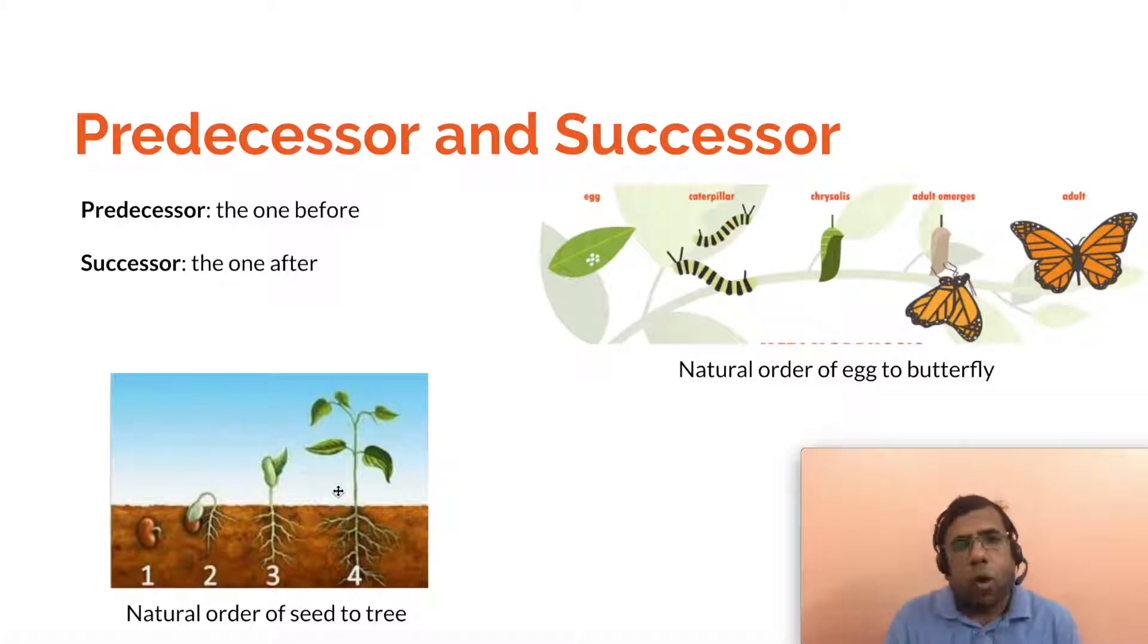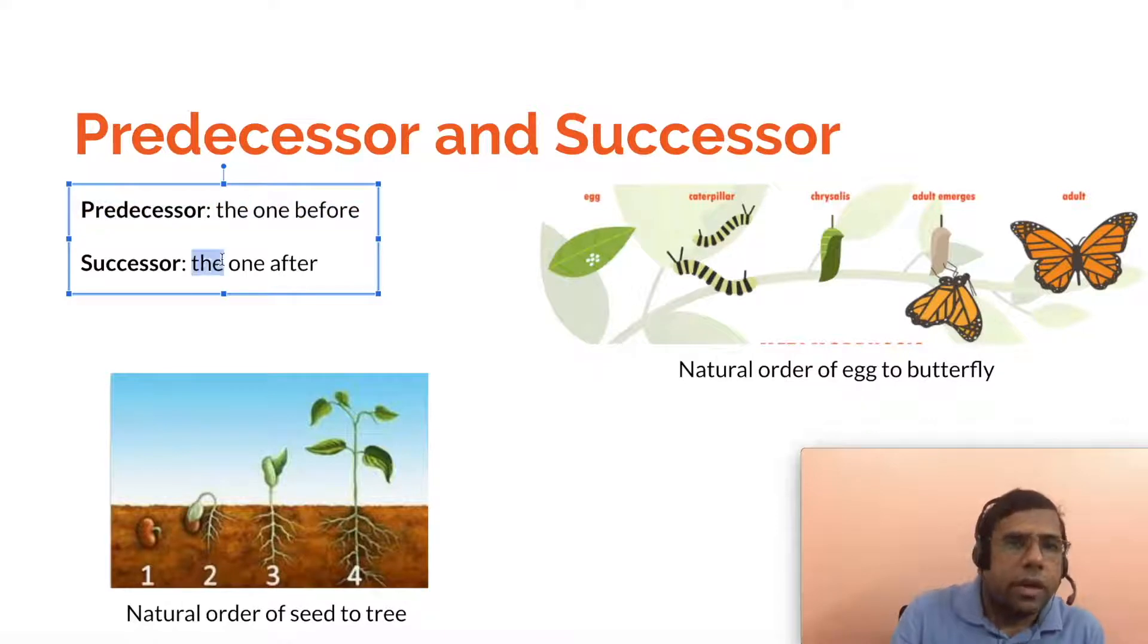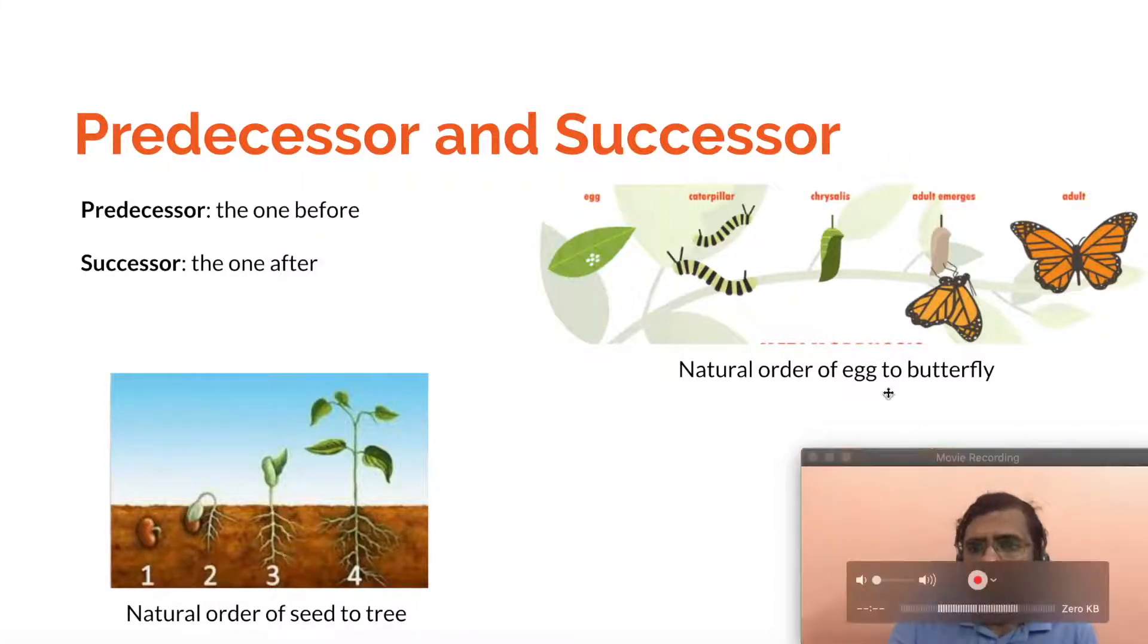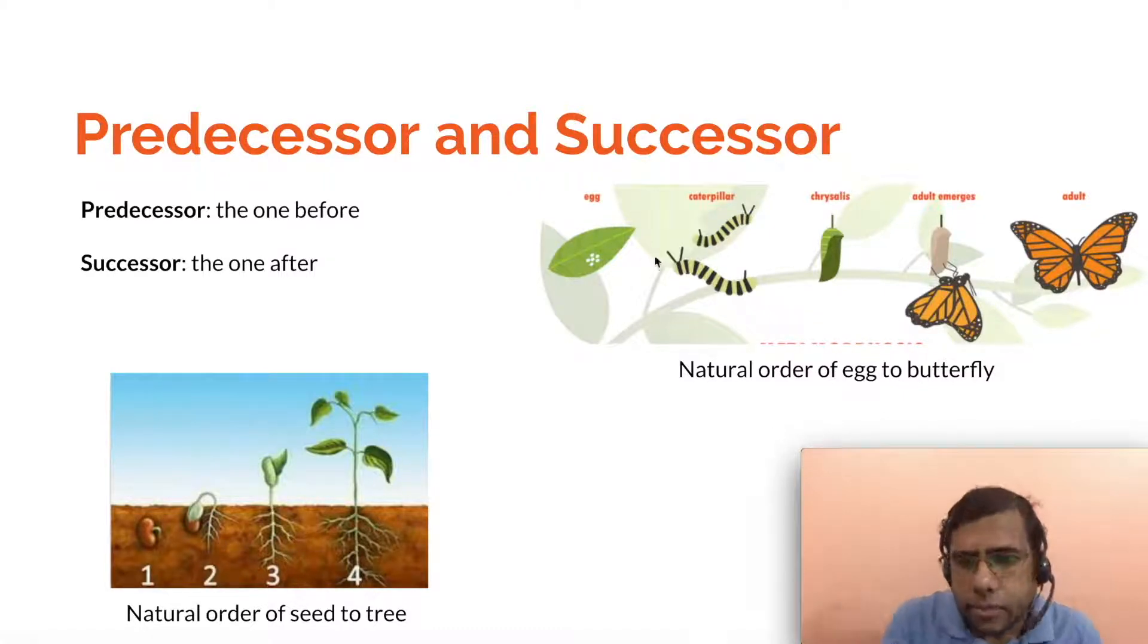This order is defined by what we call the terms predecessor and successor. Predecessor just means the one before, successor just means the one after. So one step precedes another step and one step succeeds another step. Similarly, when an egg becomes a butterfly, there is a definite order. An egg becomes a caterpillar, becomes pupa, becomes an adult and so on. So there is a definite order to things in nature and that's what we are trying to capture in these mathematical concepts as well.